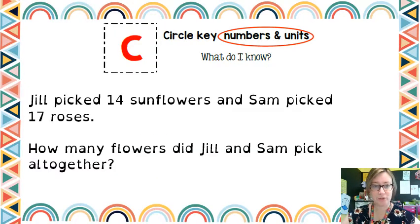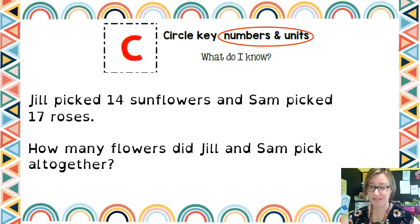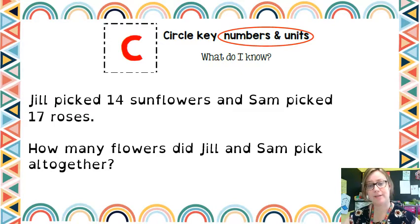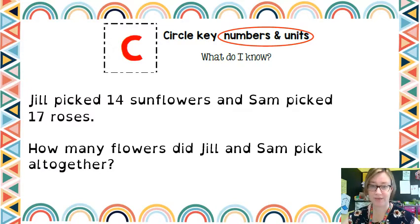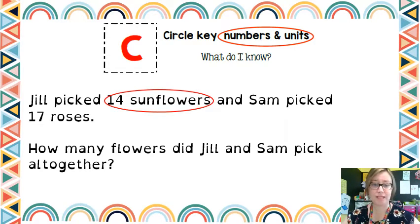For the C in QUBES, it means circle the key numbers and units. So we need to circle the numbers we're going to need to work out this word problem with. I've got a basic word problem here. It says Jill picked 14 sunflowers and Sam picked 17 roses. How many flowers did Jill and Sam pick altogether? So we need 14 — the units are sunflowers — and Sam picked 17 roses.